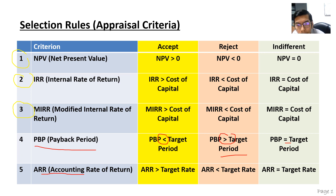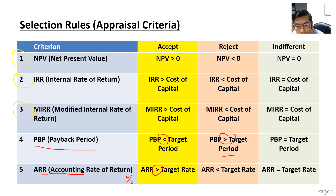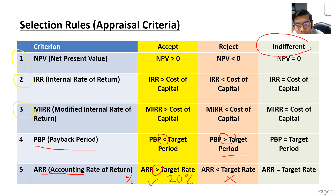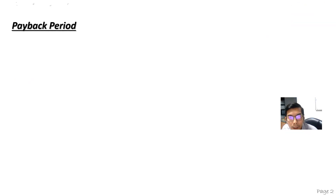For accounting rate of return, it's your target rate — how much you want to get from that particular investment in terms of percentage. For example, if you're targeting 20%: if the result is more than 20%, you're going to accept it; if less than 20%, you're going to reject it; and if it equals 20%, it's indifferent. Just to recap.